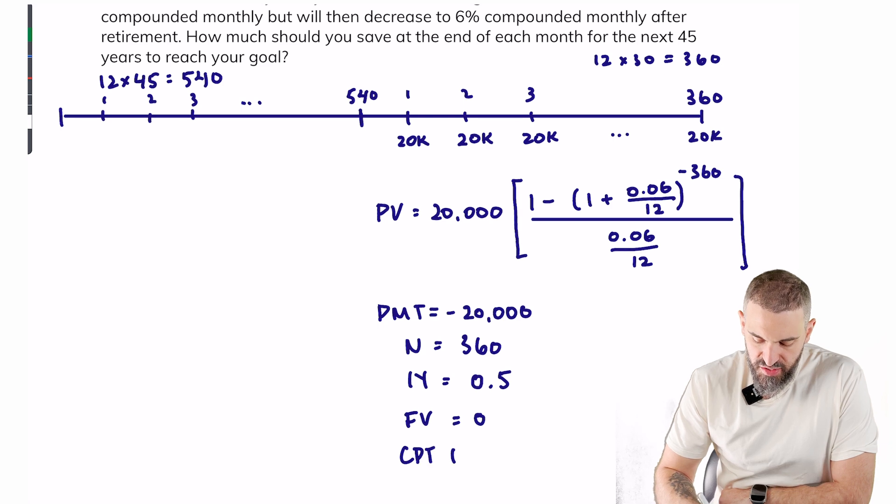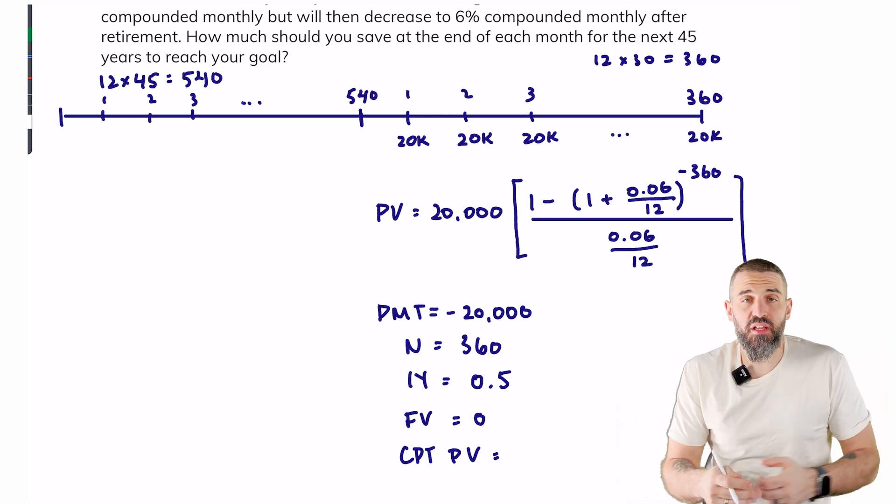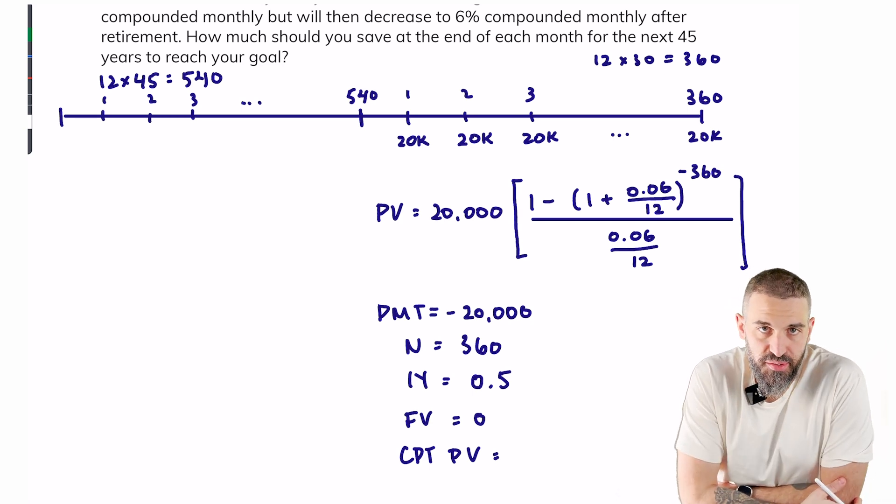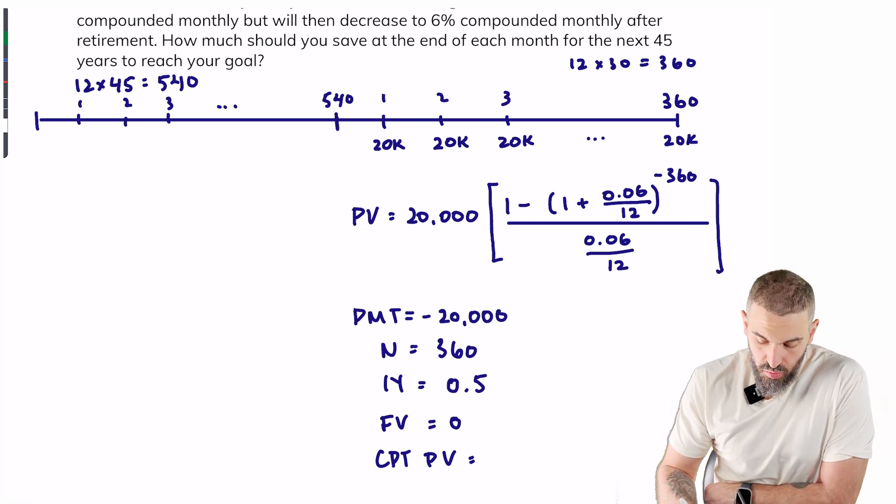There was no future value, and you would compute your present value. So whether you're using a formula or a financial calculator, you should end up at the exact same result, which is $3,335,832.29.